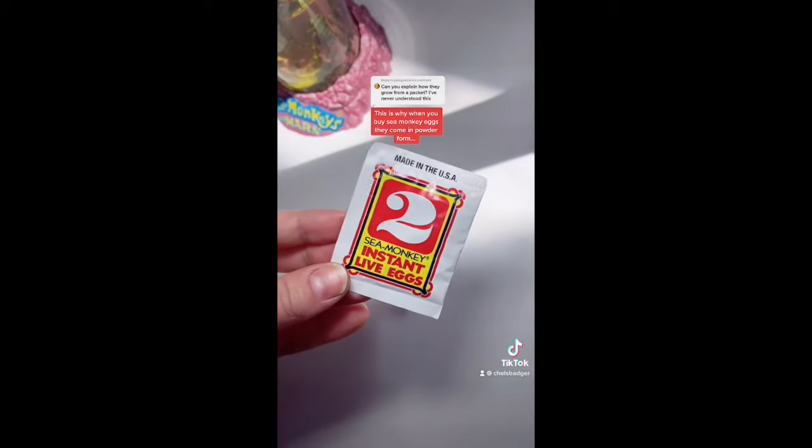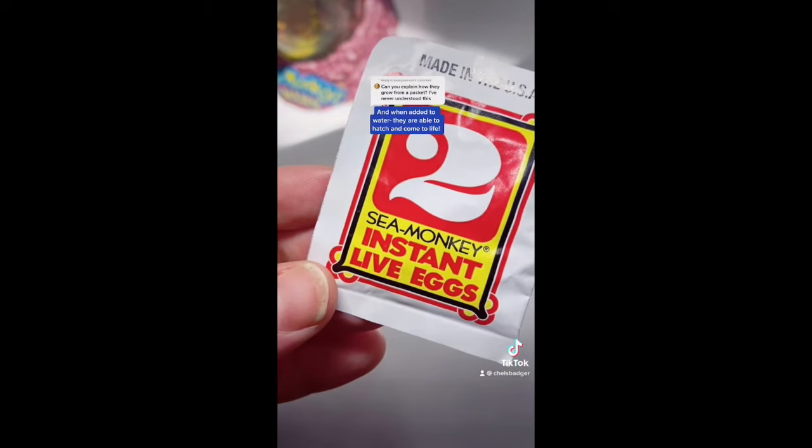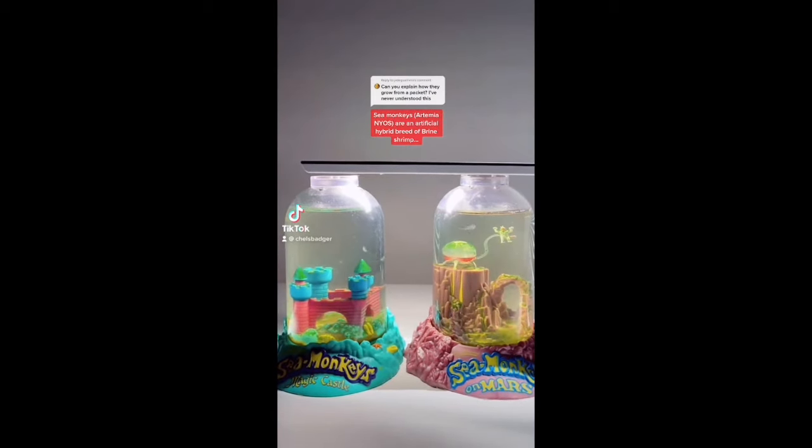This is why when you buy sea monkey eggs they come in powder form and when added to water they are able to hatch and come to life. Artemia NYOS, otherwise known as sea monkeys, are an artificial hybrid breed of brine shrimp.